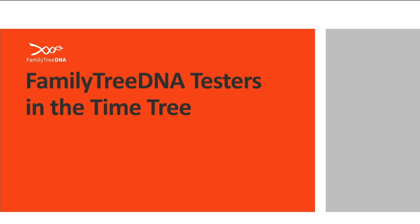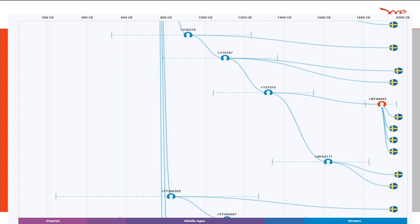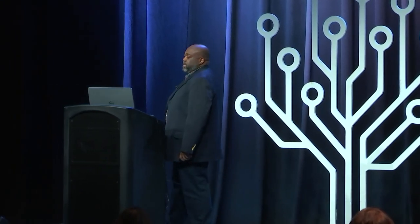Next we'll take a brief look at some Family Tree DNA testers in the time tree. This is the branch for IBY4445 — an interesting story about our head of research and development, Jorn, who is from Sweden. He always had a story about a second-great uncle who left Sweden and came to the United States never to be heard from again. When he moved to the United States about five years ago, he did a surname search and discovered a relative in Austin, Texas. Jorn did his Big Y test, one of the American side of his family did a Big Y test, and they matched — an awesome family reunion after well over a hundred years.